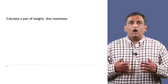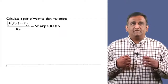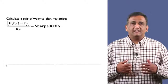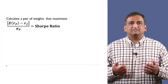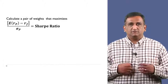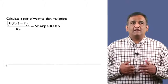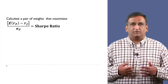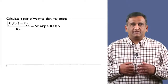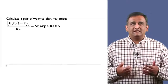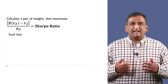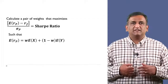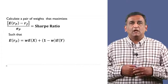How do we calculate the weights of X and Y in the mean variance efficient portfolio? We want to identify a portfolio that maximizes the Sharpe ratio — that is, a pair of weights that maximizes the difference between the expected return of the portfolio and the risk-free rate of return, divided by the standard deviation of the portfolio's returns. The expected return of the portfolio equals W times the expected return of X, plus 1 minus W times the expected return of Y.